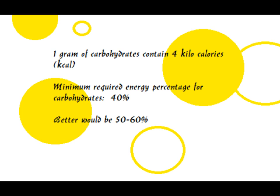Let's go through some of the basics. One gram of carbohydrates contains 4 kilocalories. So if you eat 50 grams of carbohydrates, that is 50 times 4 kilocalories, which equals 200 kilocalories. You will need at least 40% of your energy from carbohydrates, and I will show you that with an example.